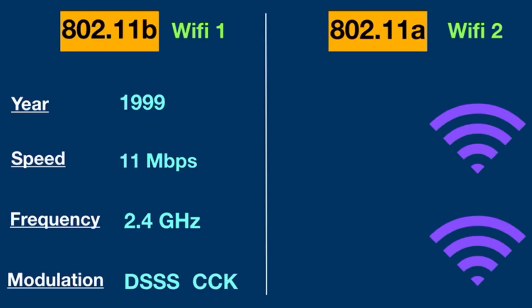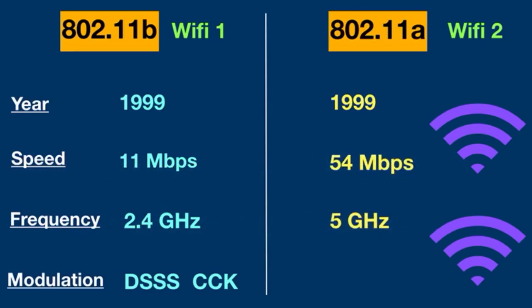802.11a is an extension of 802.11b. It was also created in 1999, and provided speed up to 54 Mbps in the 5 GHz band. It used the OFDM modulation scheme. The 5 GHz frequency had more difficulty with objects in the signal's path, so the range was often poor. 802.11a came after 802.11b because of OFDM technology.